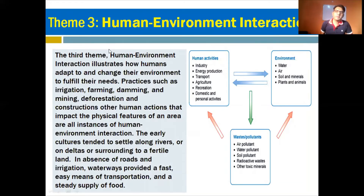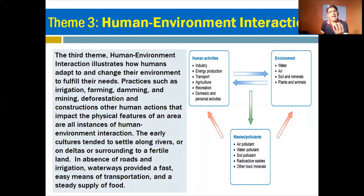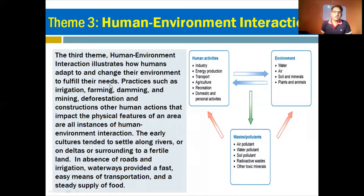Number three is human-environment interaction. This is very important — even one of the key definitions of geography is related to human-environment interaction. This theme illustrates how humans adapt to and change their environment to fulfill their needs. We look at what type of relationship we have with our surrounding environment — whether physical or human-made — and whether man is adapting to his surroundings or changing them. Practices such as irrigation farming, damming, mining, deforestation, and construction are all instances of human-environment interaction.